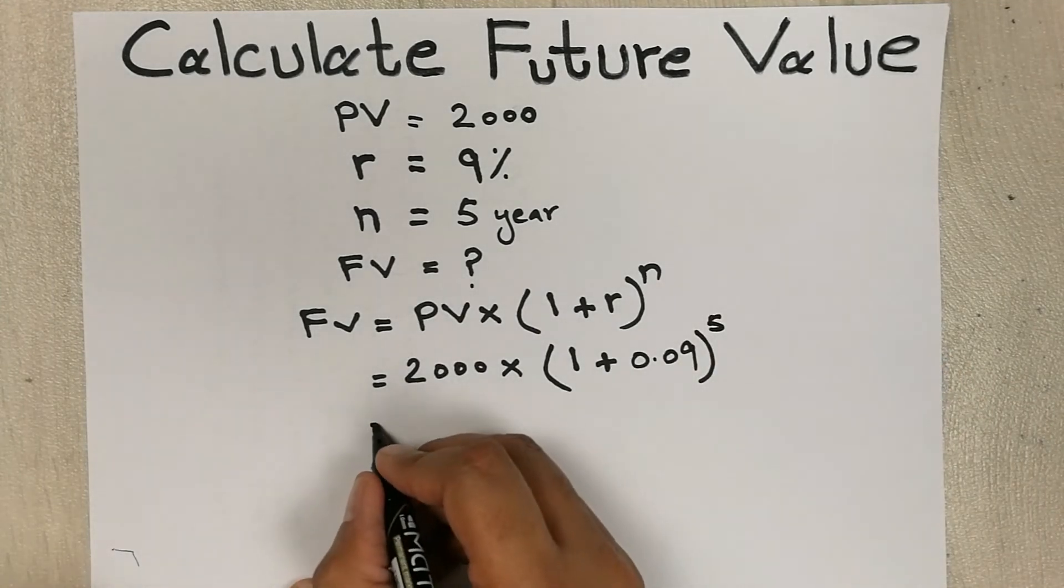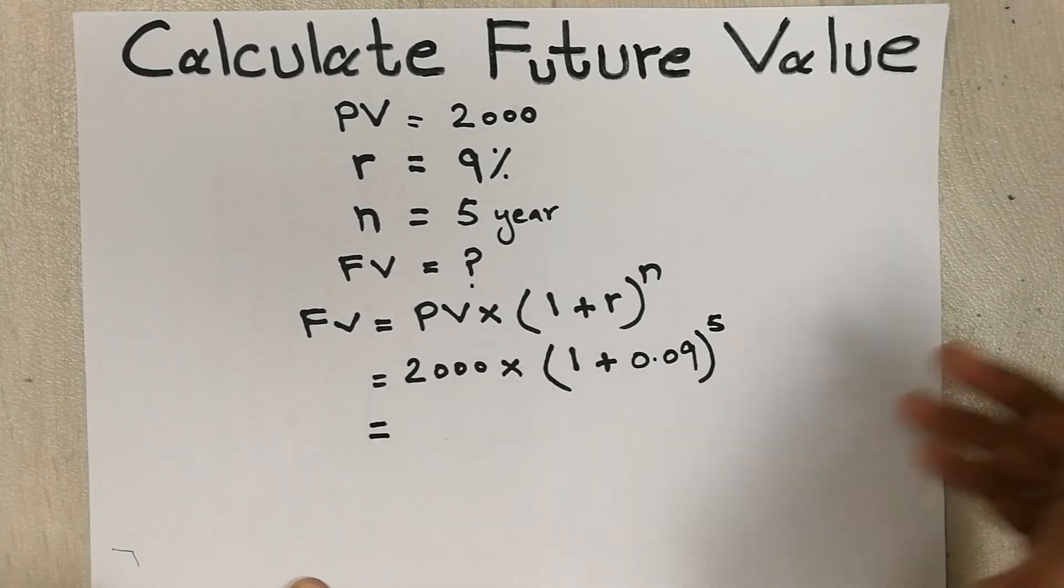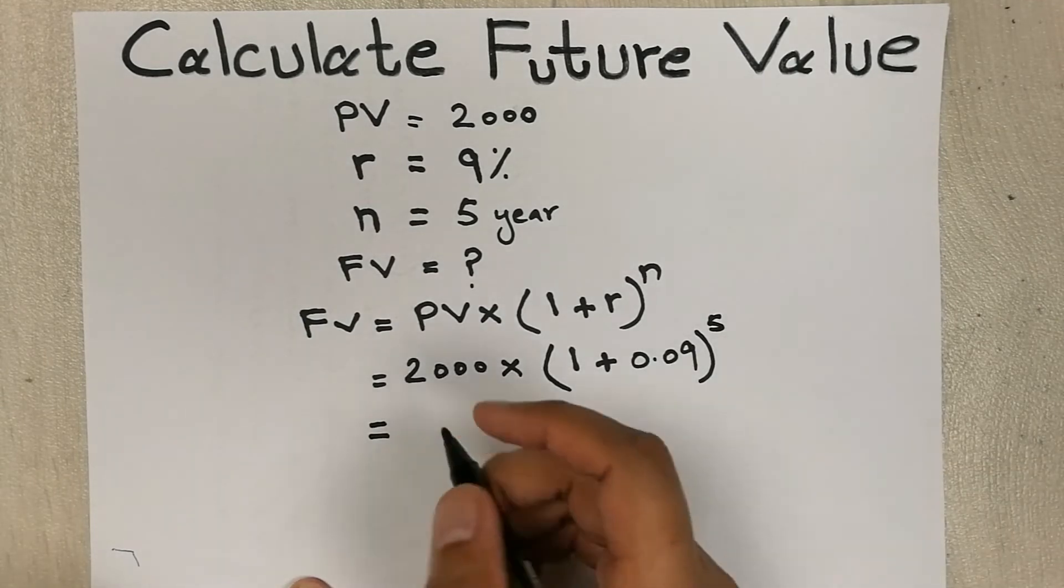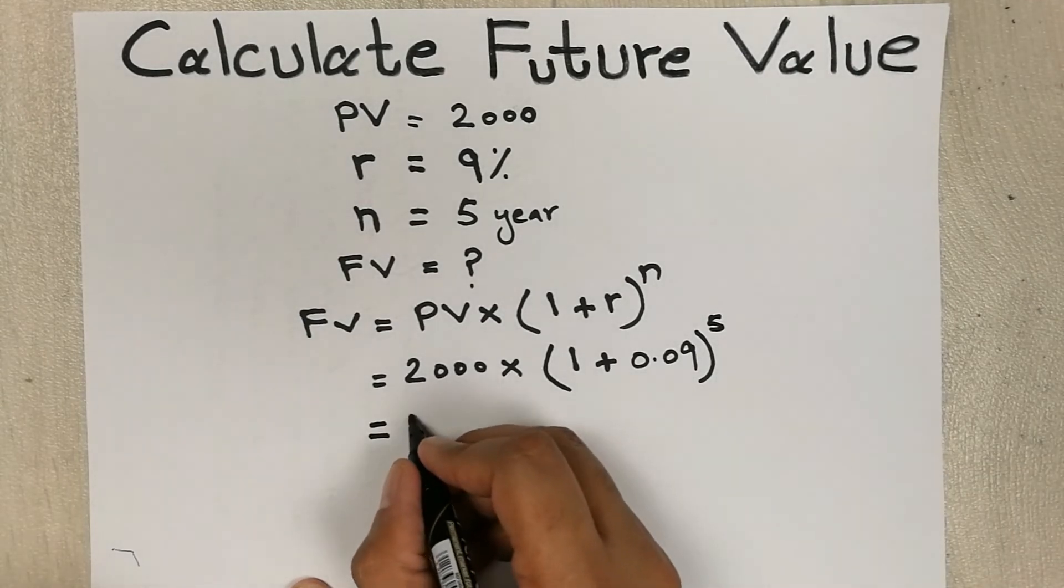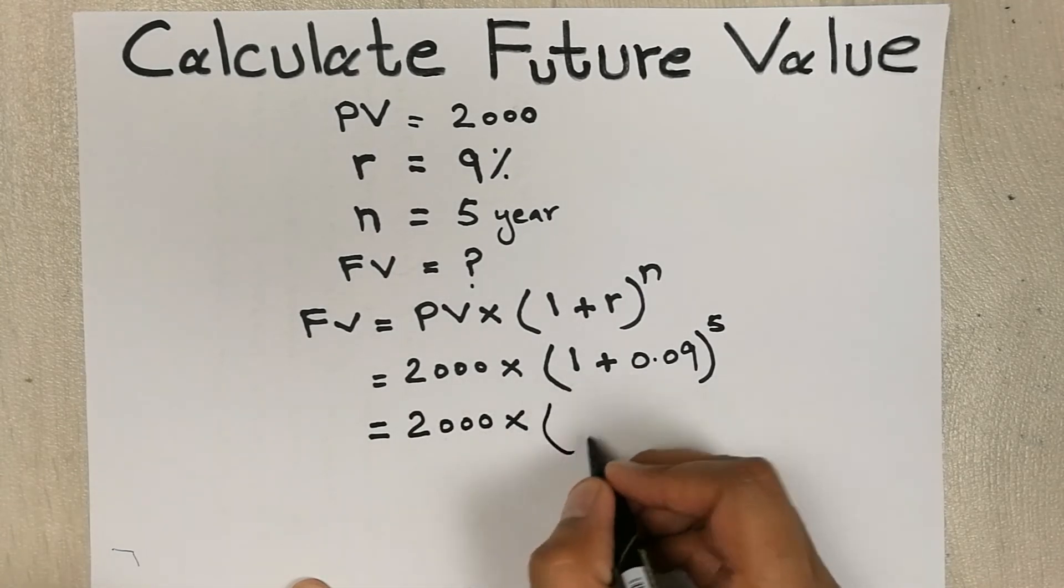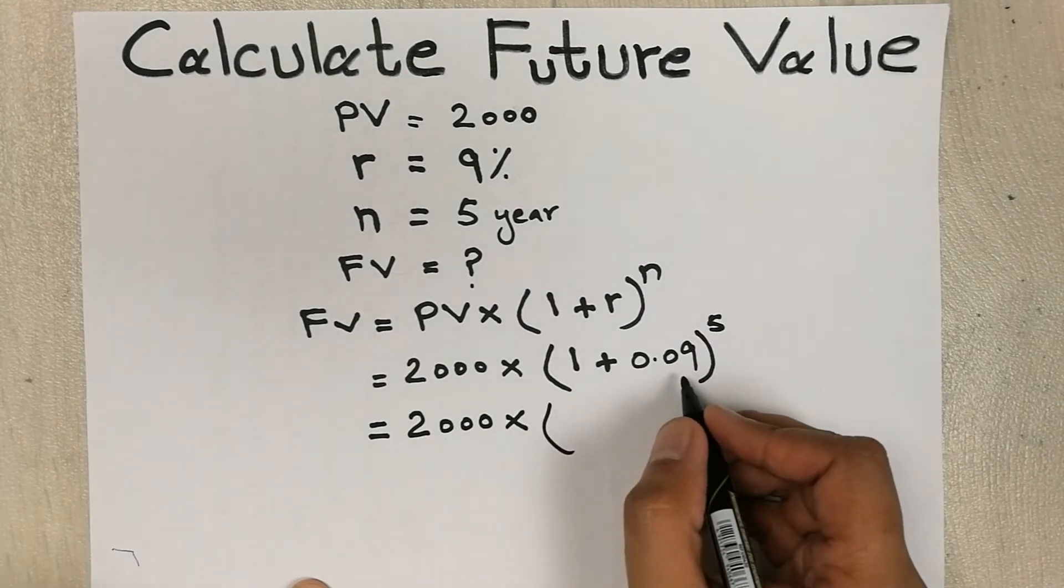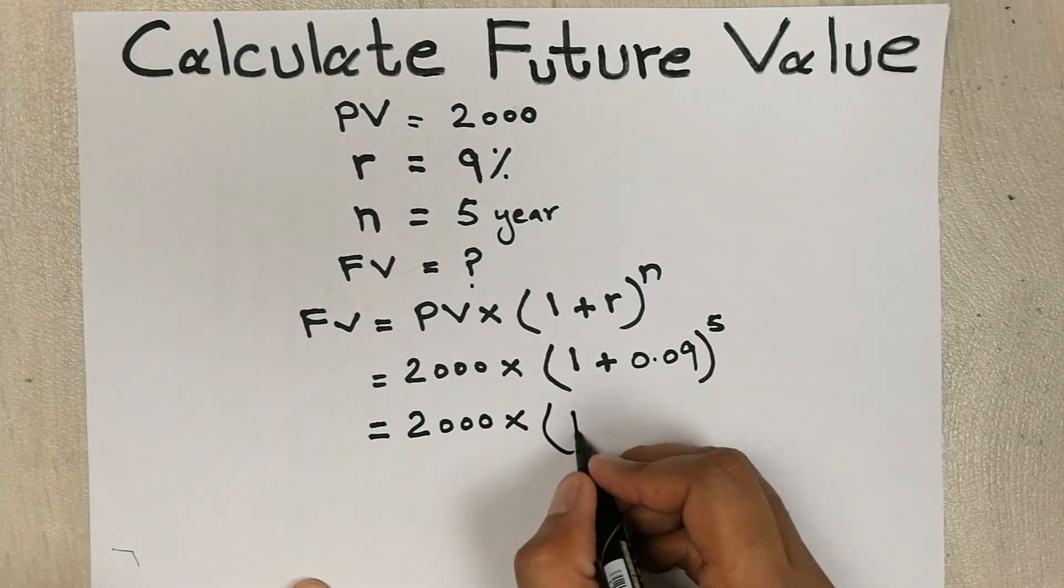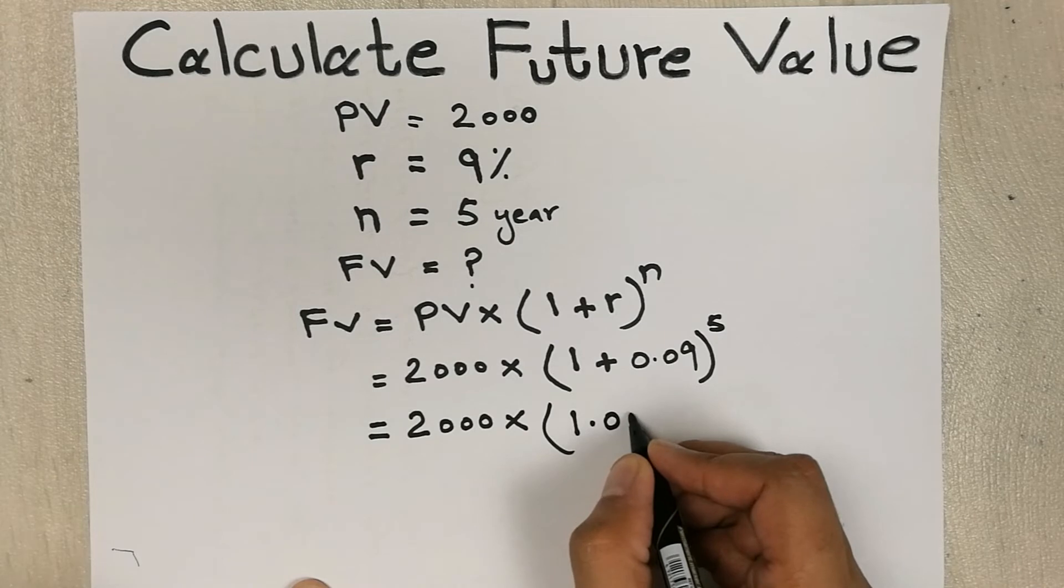In the next step we simplify this calculation. 2000 multiply, and inside we will do 1 plus 0.09, which is 1.09 raised to the power five.